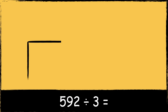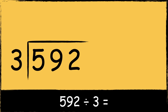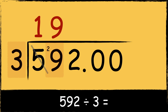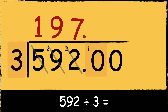Here's the next example: 592 divided by 3. Remember we need to place a decimal point and some zeros after the divisor. Three goes into five once with two left over. Three goes into twenty-nine nine times with two left over. Three goes into twenty-two seven times with one left over. As we're now working after the decimal point, we also need a decimal point in the answer.